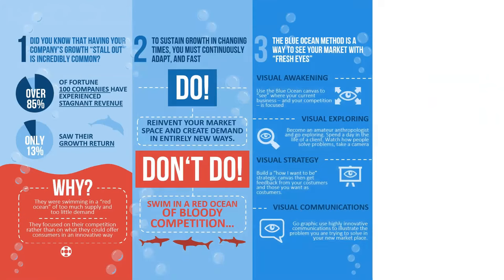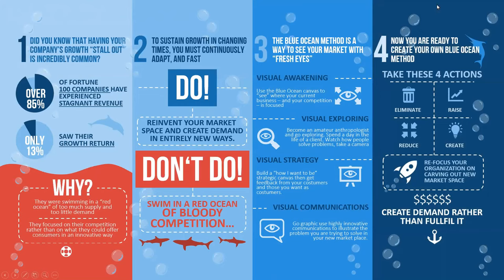It requires a visual awakening in how you look at things. It requires exploration. It requires a strategy that's very visual, and it requires communications — and I'll show you how we can communicate what we're looking at through graphing and different tools. Once you think about how to create a blue ocean, it requires you to take four different actions: look at factors of competition and determine which to eliminate, which to raise, which to reduce, and most importantly, what to create that's brand new.